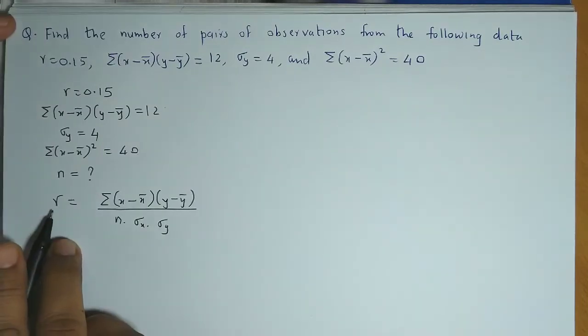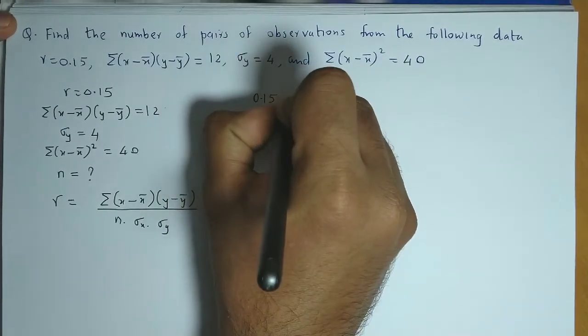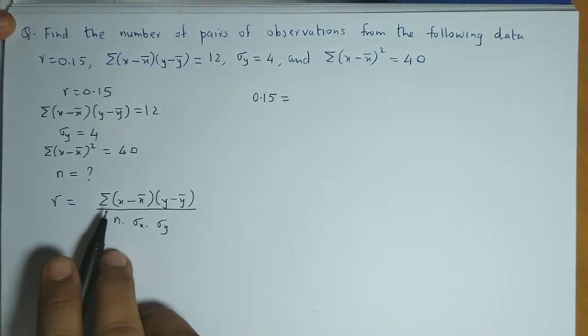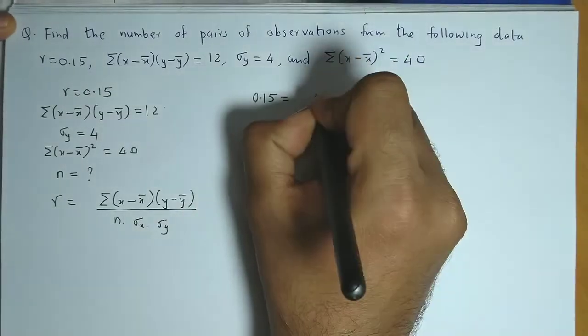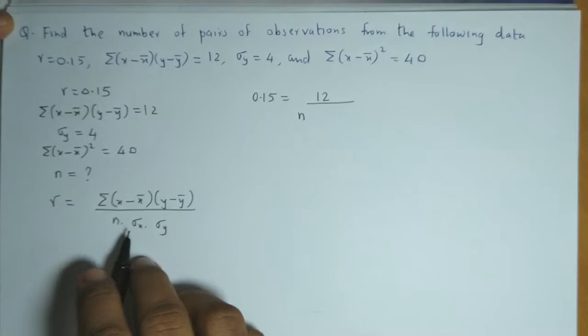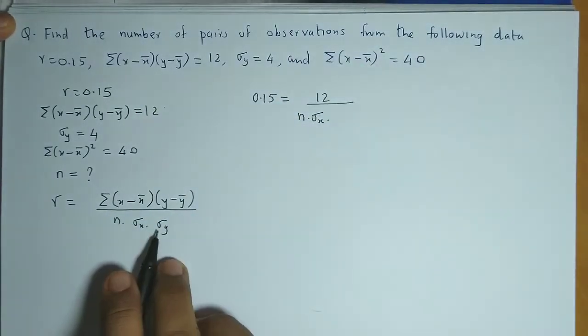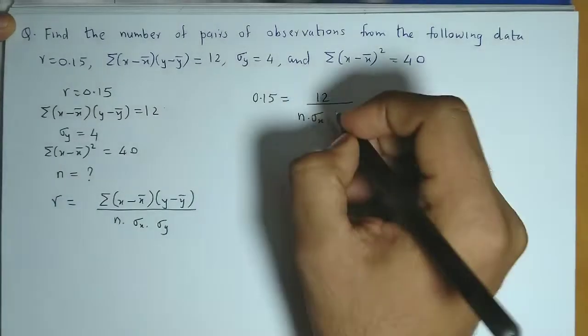Now the value for r is 0.15, so we have 0.15 equals summation value is 12. n is unknown. Standard deviation of x is also unknown, and standard deviation of y is 4.